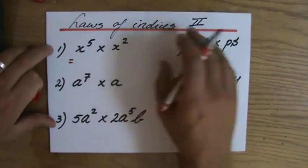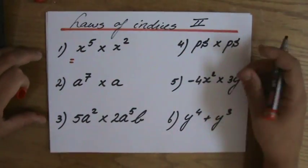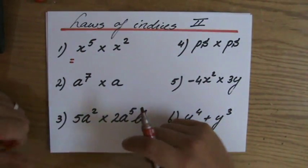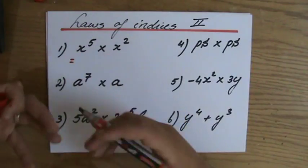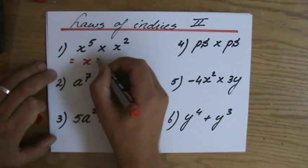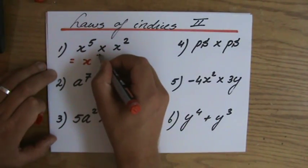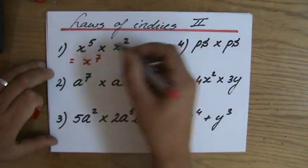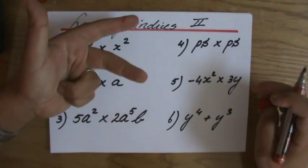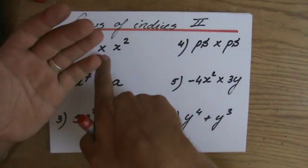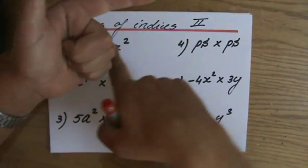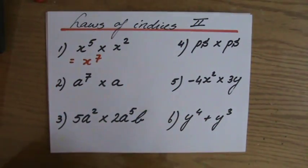x to the power 5 times x to the power 2 — the bases are the same, you are multiplying, so first law of the indices: the answer is x to the power 7. That actually means x times x times x times x times x times x times x — x to the power 7.